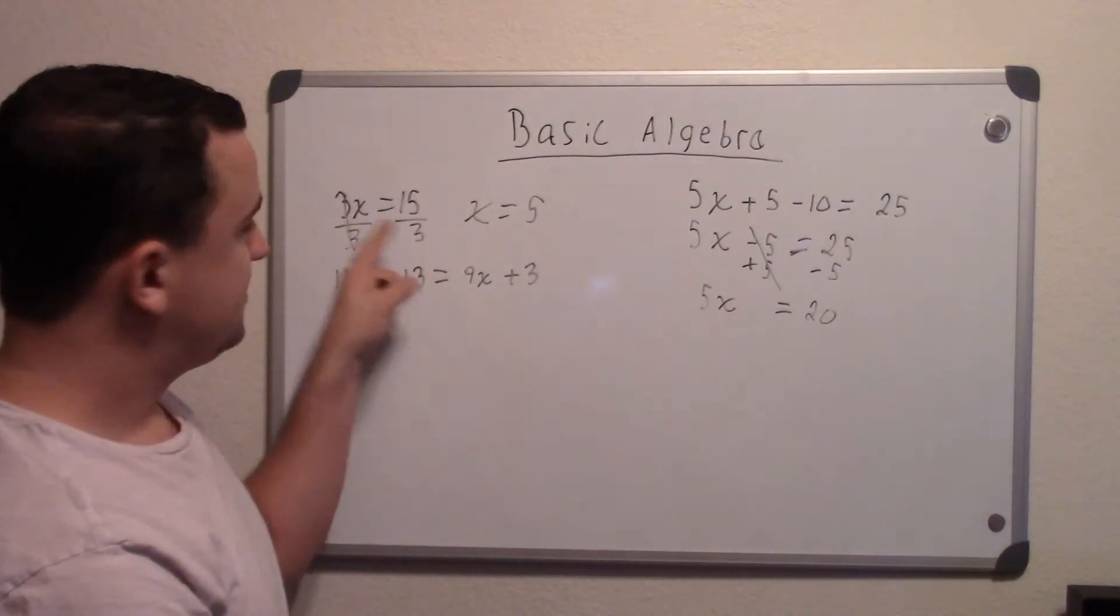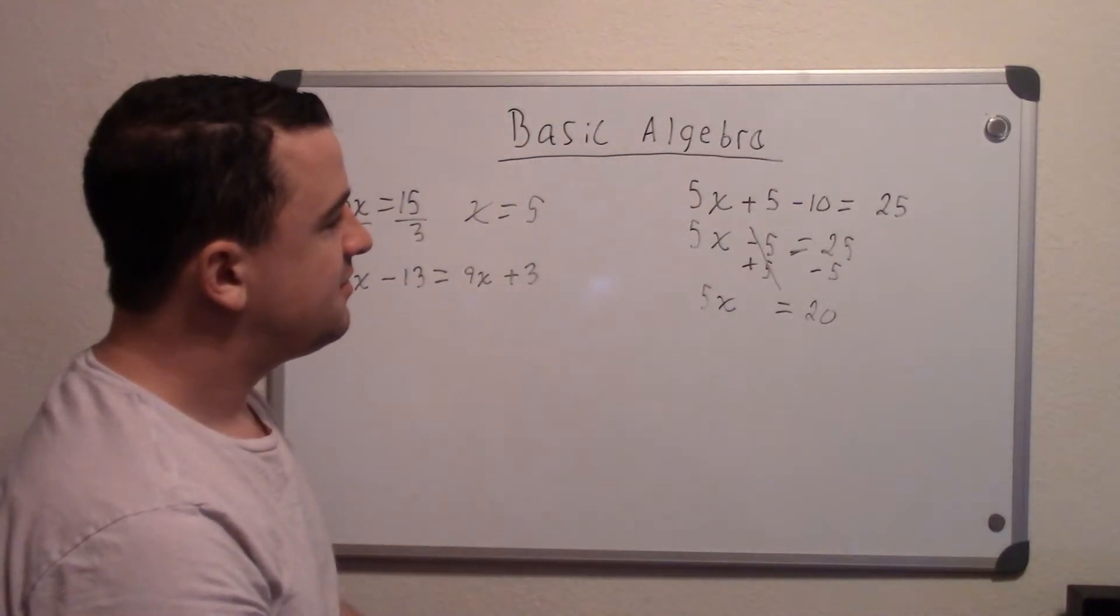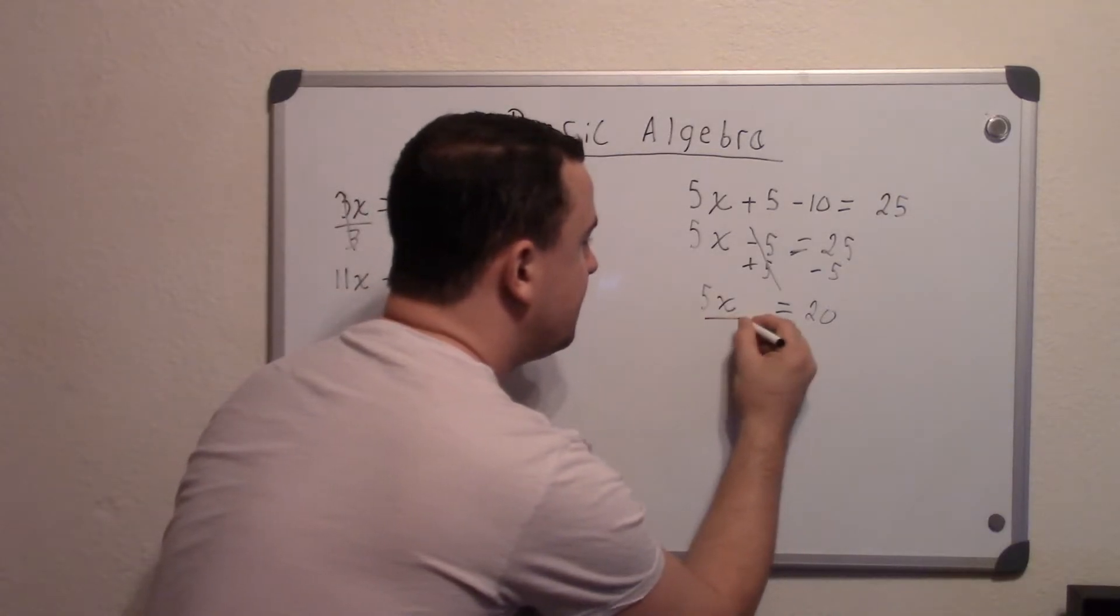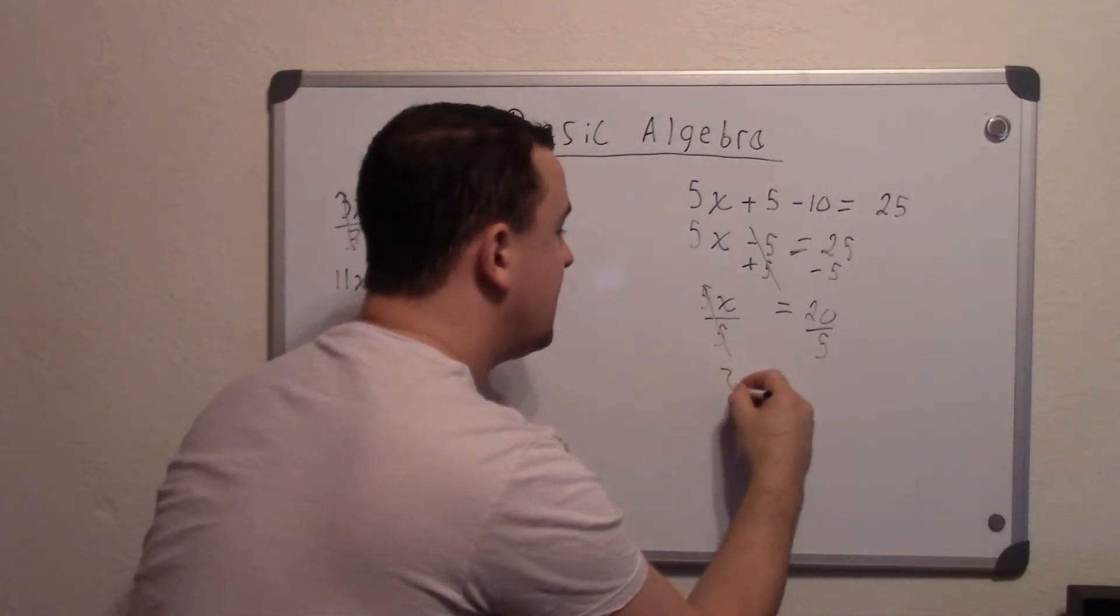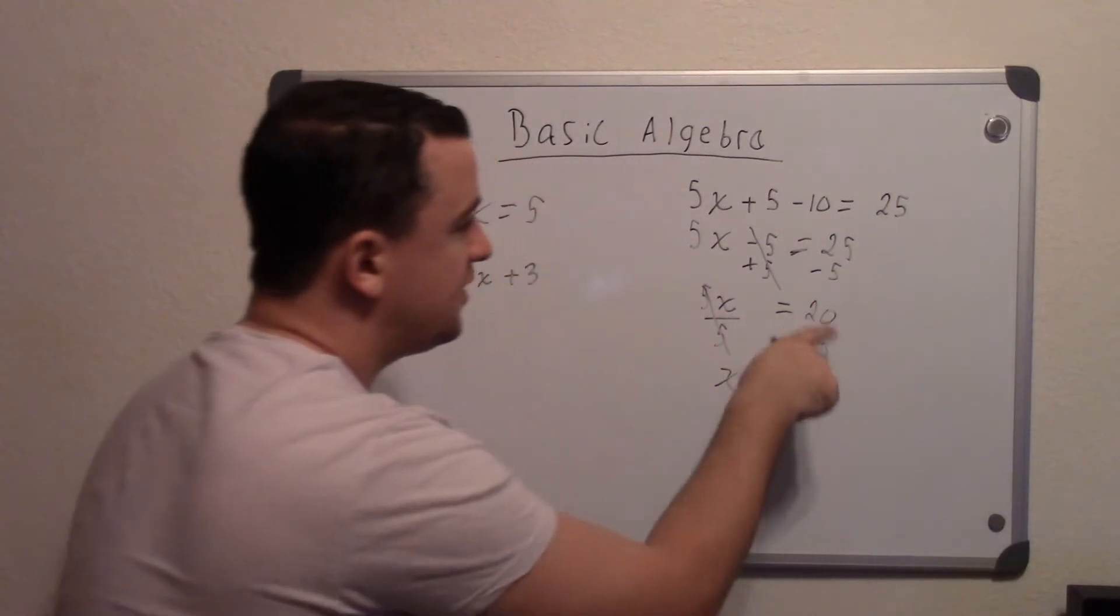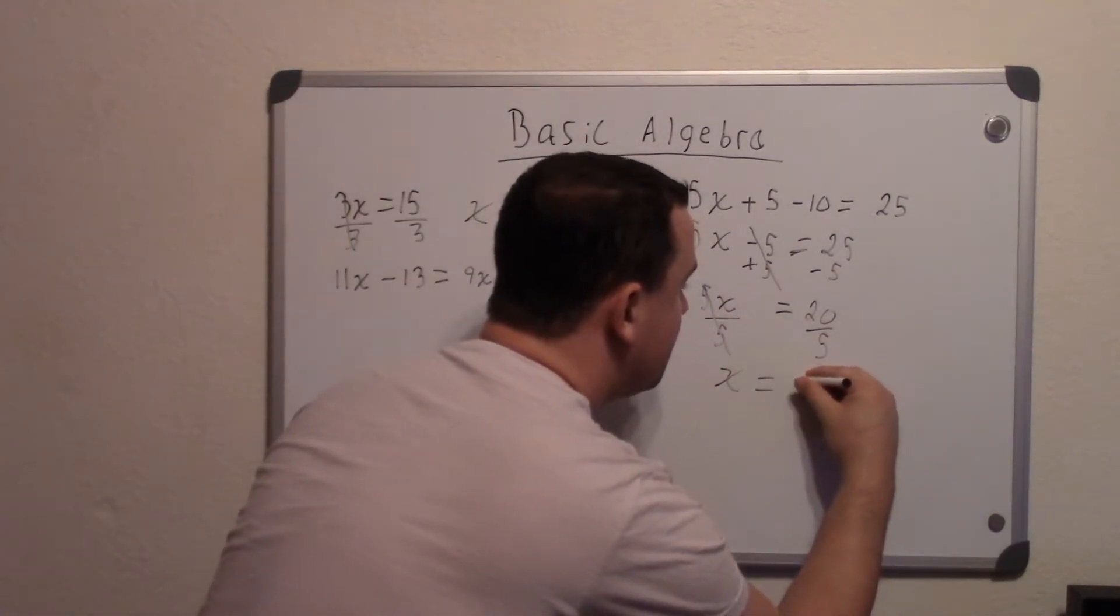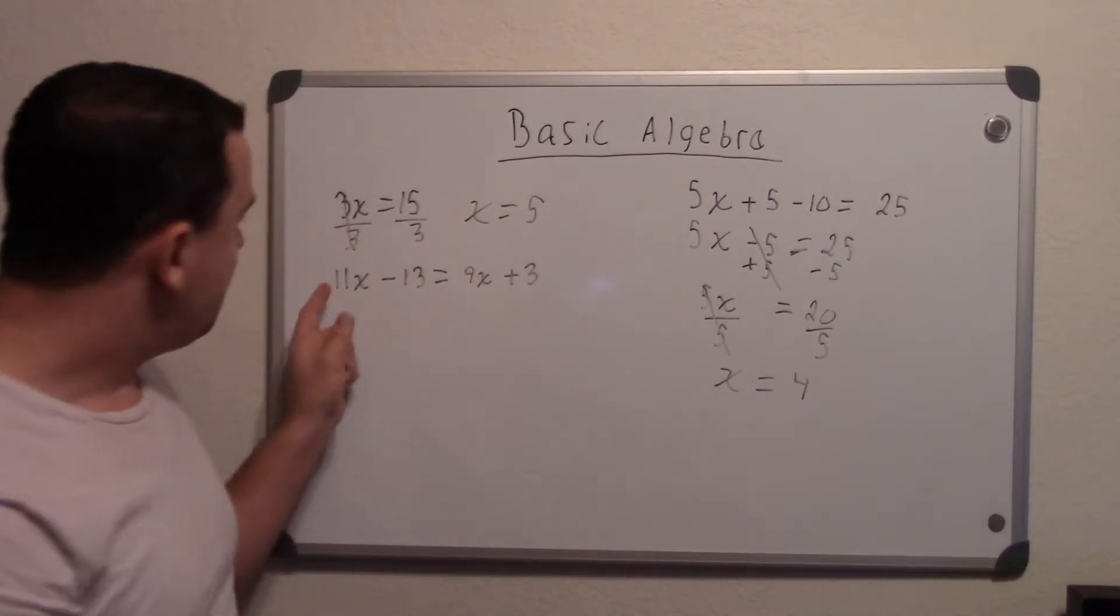So now we get back to this situation. 5 is being multiplied by x. So now we divide by 5, both sides. The 5s cancel out, leaving you with x. And 20 divided by 5 is 4.